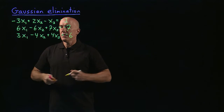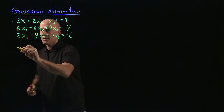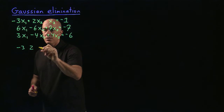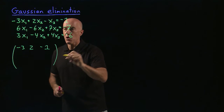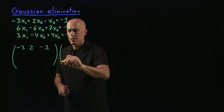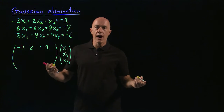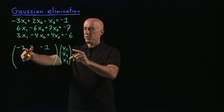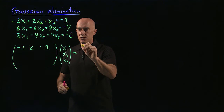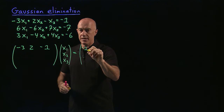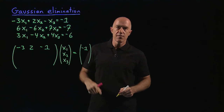So how do we do that? The first equation is the first row of the matrix. You take the coefficients — minus three, two, minus one — and multiply by the unknown vector x1, x2, x3. This is why we define matrix multiplication the way we did: we have minus three x1 plus two x2 minus x3, which equals the right-hand side, minus one. So the first equation is represented by the first row of the matrix.